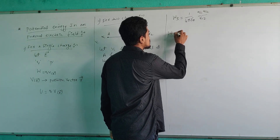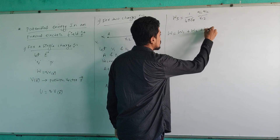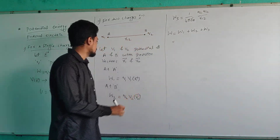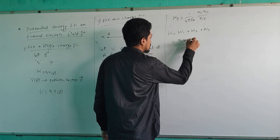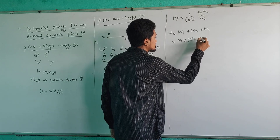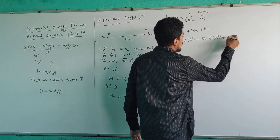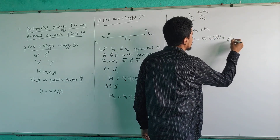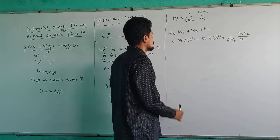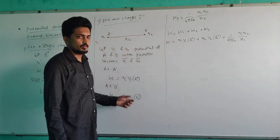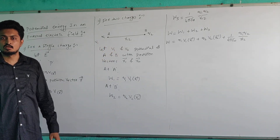Now total work done W is the sum of individual work done: W1 plus W2 plus W3. Substituting the values: W is equal to Q1 × V1(R1 vector) plus Q2 × V2(R2 vector) plus (1 / 4πε₀) × (Q1 × Q2) / R12. So this is the total work done by these two charges in the presence of an external electric field.